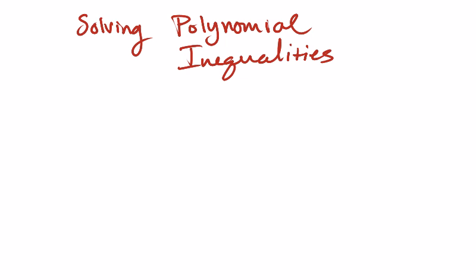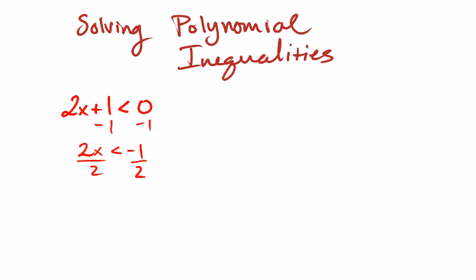Other than that, everything is kind of standard and normal. So for something like 2x plus 1, where it's less than 0, you just solve it as normal. You subtract 1 from both sides, so you get 2x is less than negative 1, and then you divide by 2, and so then you get x is less than negative 1 half, and that's your answer.